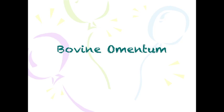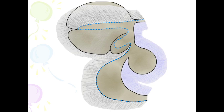Because the bovine omentum is much more complex than the equine or the canine, we're going to spend a little bit of time here looking at it. If we look at an image where they've taken the ruminant stomach and stretched it out, we can trace from the esophagus the rumen here. We have a left and a right longitudinal groove of the rumen, then the reticulum, omasum, and the true stomach, the abomasum.